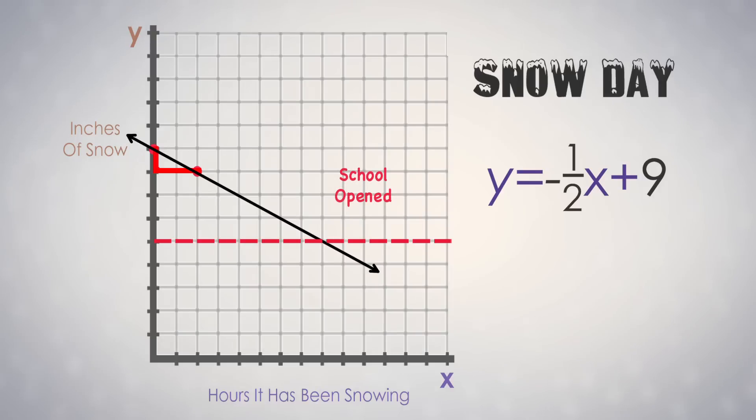If school were to be reopened after reaching a total of 5 inches of snow, how long until school opens? As you can see from the graph, it will take 8 hours for enough snow to melt for school to reopen.